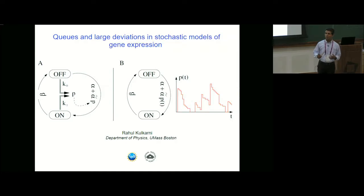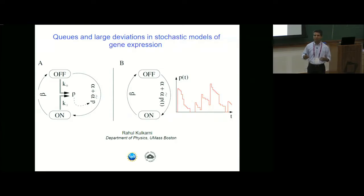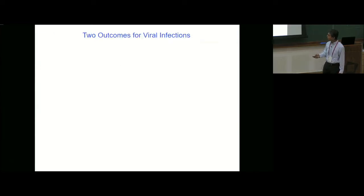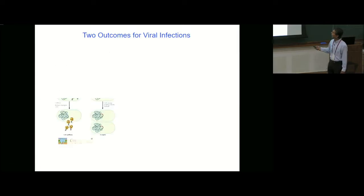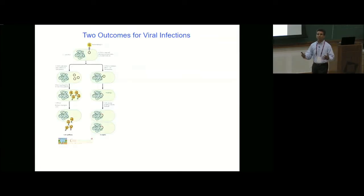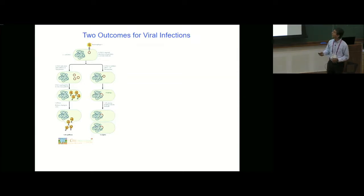That is what has motivated increasing interest in stochastic models of cellular processes, and that will be the focus of this talk. So let me begin with some motivating examples. One of the textbook examples of heterogeneity of outcomes for an identical population is infection of bacteria by a virus called bacteriophage — bacteriophage literally means bacteria killer.